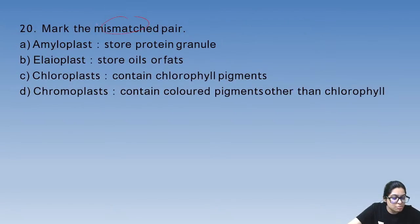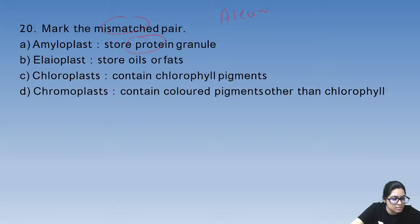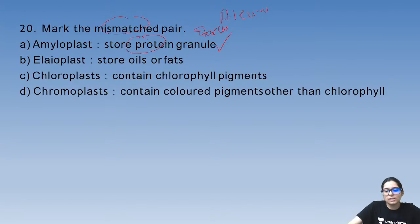Mark the mismatched pair. What does aleurone do? Starch is stored by amyloplasts. Aleurone stores protein — I taught you this in class. So the mismatched pair is the one wrongly associating aleurone with starch.